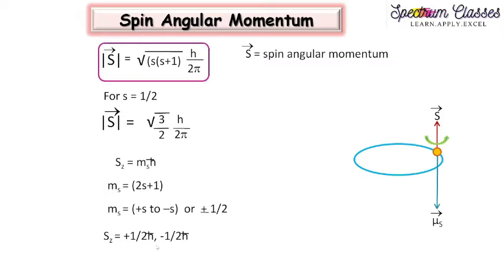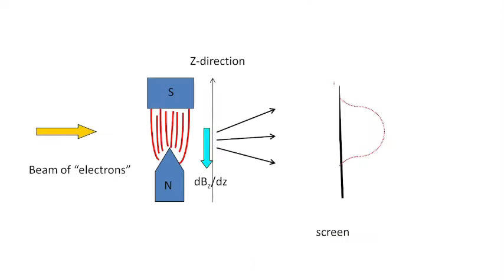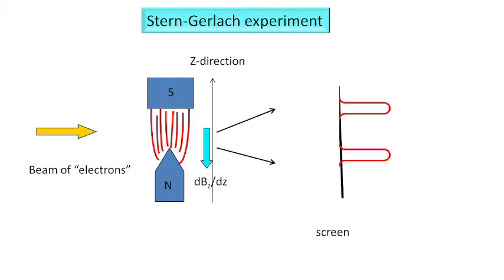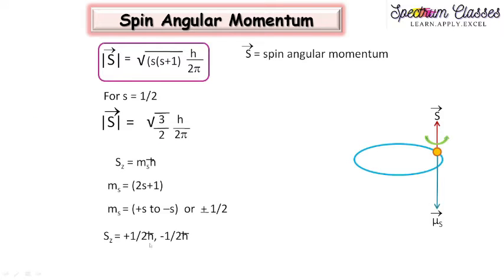The z-component has two different orientations: +½ℏ and −½ℏ. This is experimentally verified by the Stern-Gerlach experiment. In this experiment, a beam of electrons is passed through an inhomogeneous magnetic field applied in the z-direction, where ∂B/∂z is the rate of change of magnetic field in the z-direction. Classically, a single continuous peak is expected, but observation shows two separate peaks — one for +½ (spin-up) and one for −½ (spin-down).